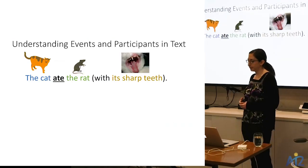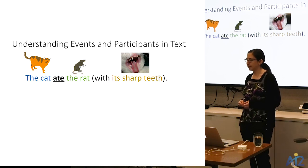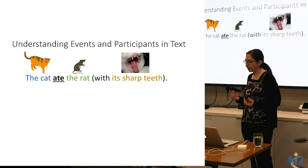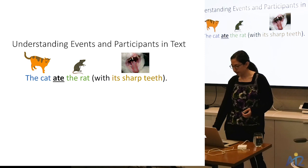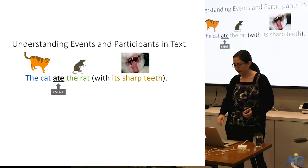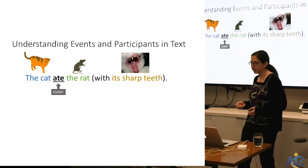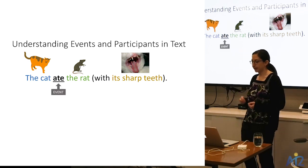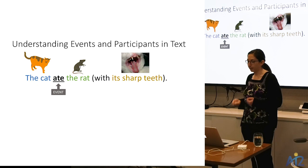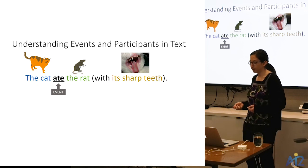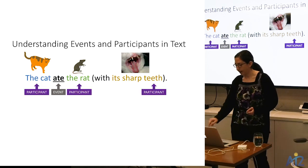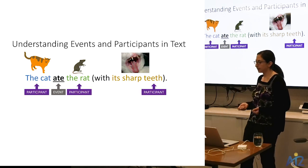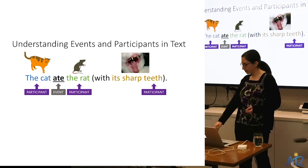The focus of this talk is on understanding events and participants in text. In this example sentence, 'the cat ate the rat with its sharp teeth,' we have an eating event denoted by the verb 'ate,' and we have three participants: the cat, the rat, and its sharp teeth.